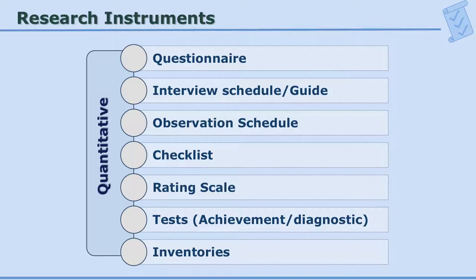There are a variety of tools available to a researcher who wants to quantify. For example, a very well-known tool is the questionnaire. Another is the interview, for which we prepare an interview schedule or interview guide. The third could be observation — a technique for which we use observation schedules, checklists, and rating scales. We also use a variety of tests, for example intelligence tests, achievement tests, and diagnostic tests. We also use inventories — for example, to assess a student's social, emotional, and scholastic adjustment. So these are the tools used for quantitative data collection.